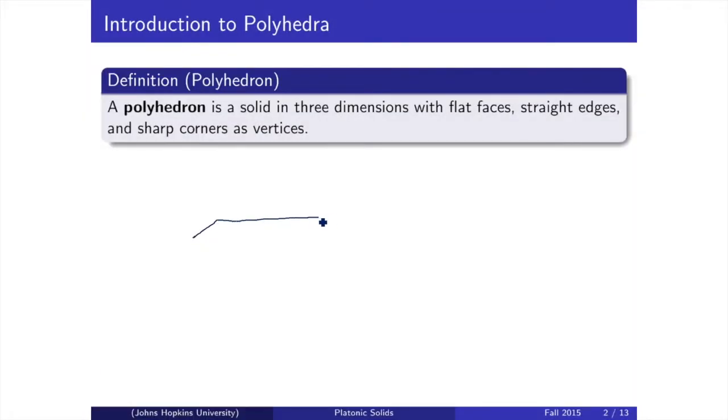A polyhedron is a 3D object whose faces are polygons, and these faces intersect at what we call edges. When three or more edges intersect at these corners, they form vertices.